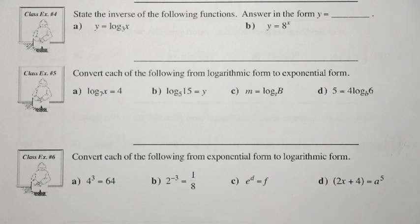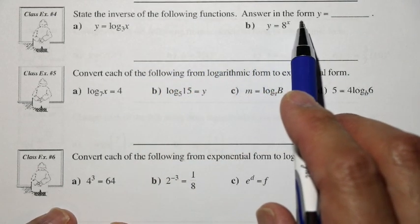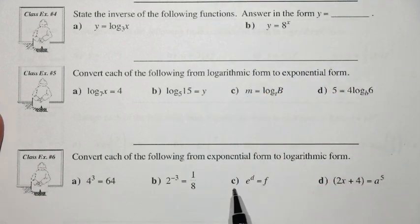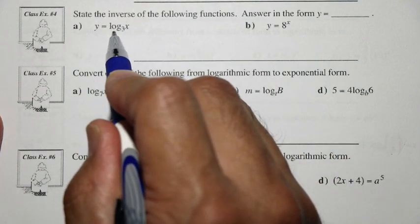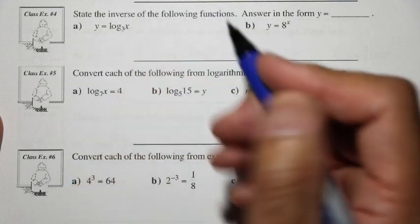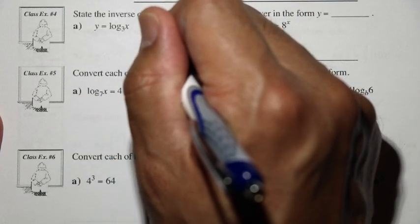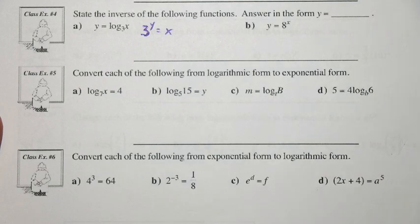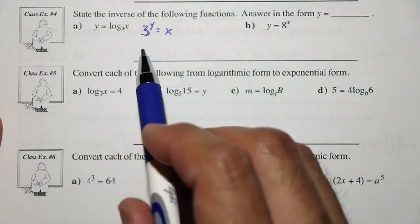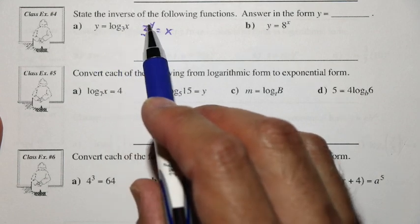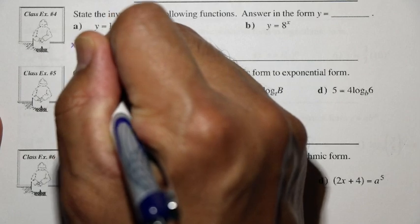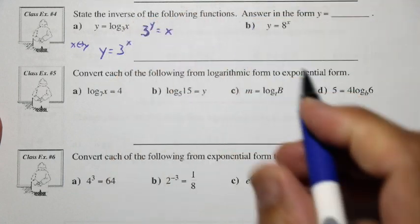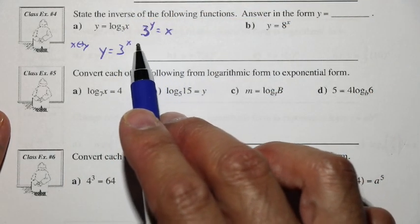Let's take a look at class example 4 and state the inverse of the following functions, with answers in the form y equals blank. The inverse of y is equal to log base 3 of x — remember, this is the same as saying base 3 to the exponent y is equal to the x value. We can take the inverse by interchanging x and y, so the inverse is y is equal to 3 to the x.